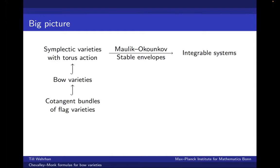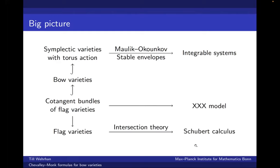In the case of cotangent bundles of flag varieties, the integrable model side is very well known. In this case, we recover the XXX model. Also, the cotangent bundles of flag varieties project down to the flag varieties, and in this case we have the rich combinatorics of intersection theory, known as Schubert calculus. Our approach to understanding the theory for bow varieties is to take well-known results from the XXX model and Schubert calculus and try to find out how they generalize to the world of bow varieties.